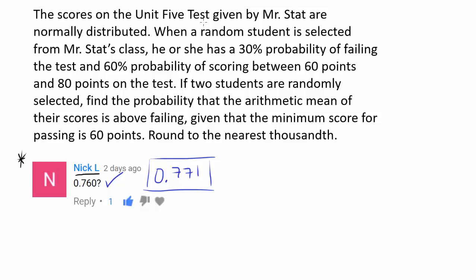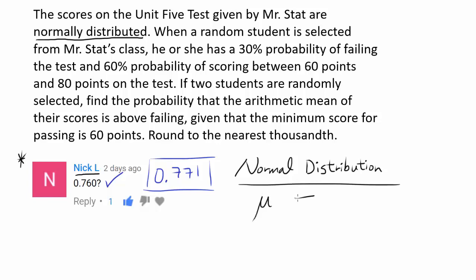We know the scores on the test are normally distributed. Whenever you have a normal distribution, the two parameters that should come to your mind are mean and standard deviation. If we know mean and standard deviation for a normal distribution, we can find anything about it. However, they are not giving us the values for mean and standard deviation — so we have to find them.